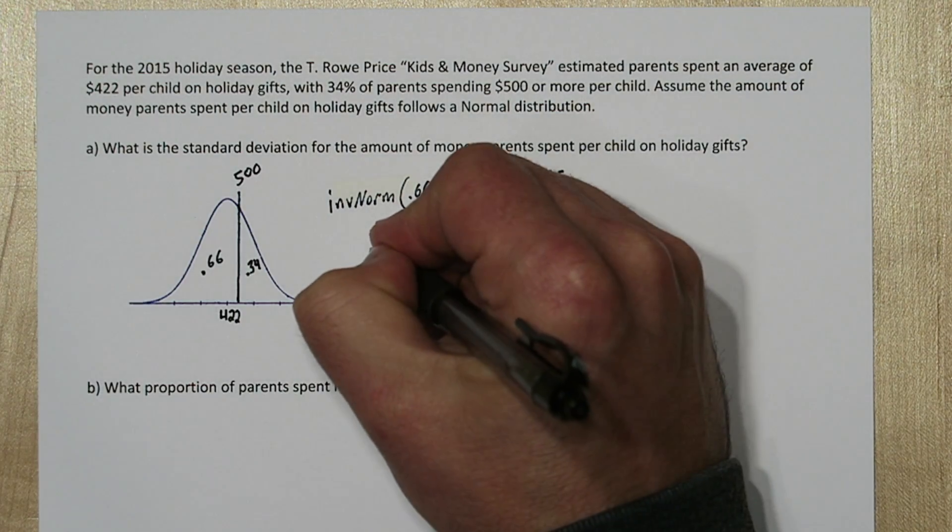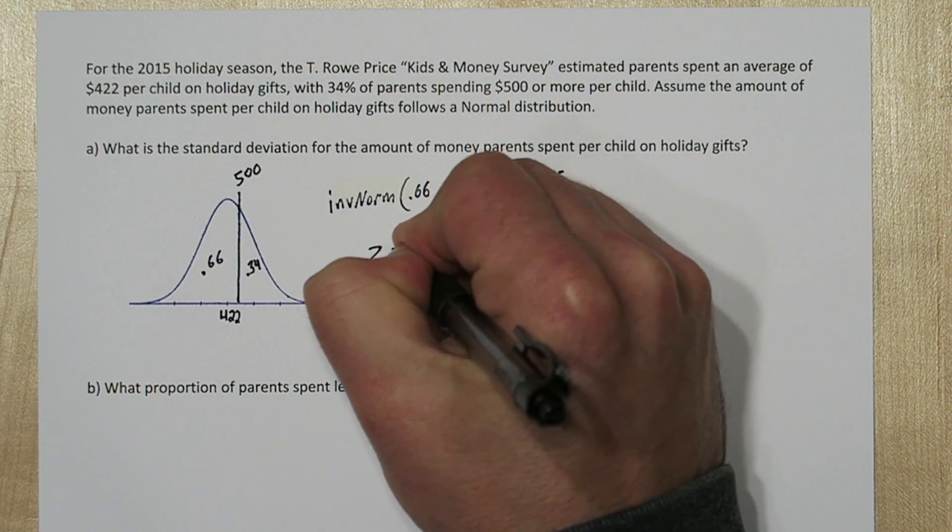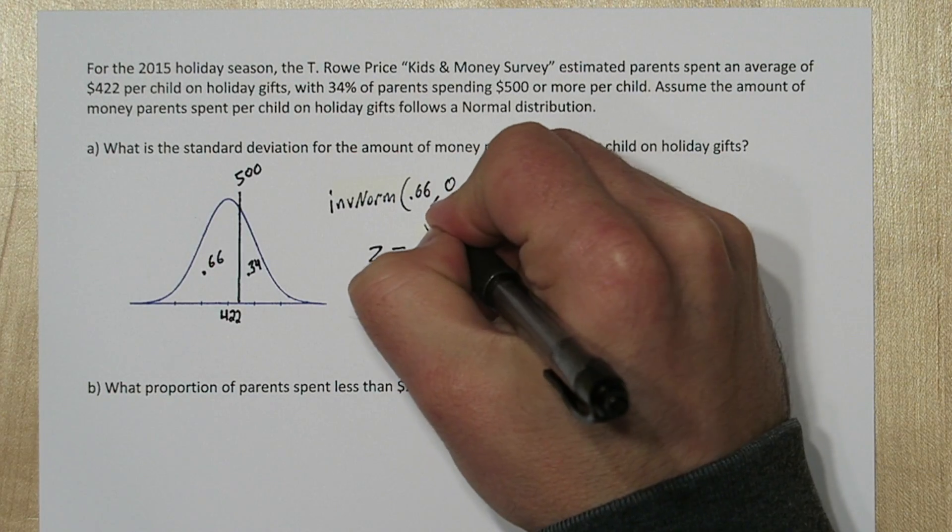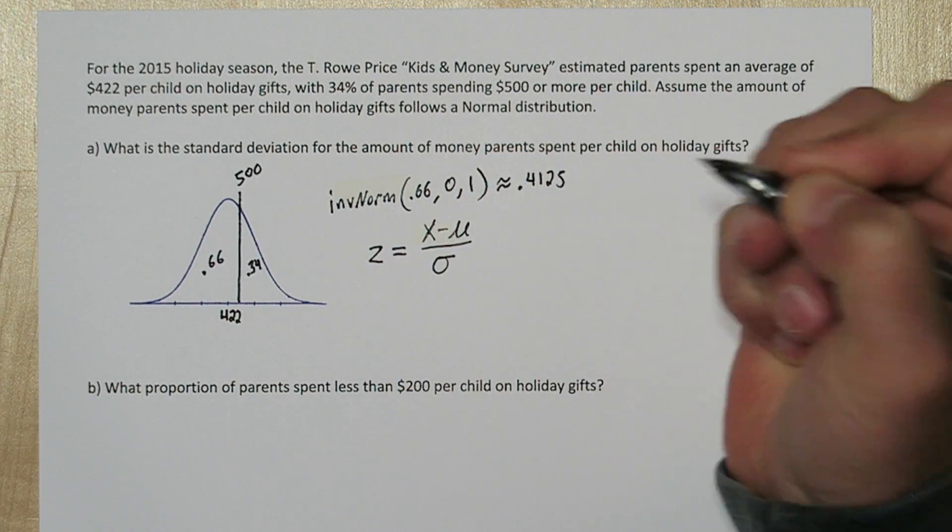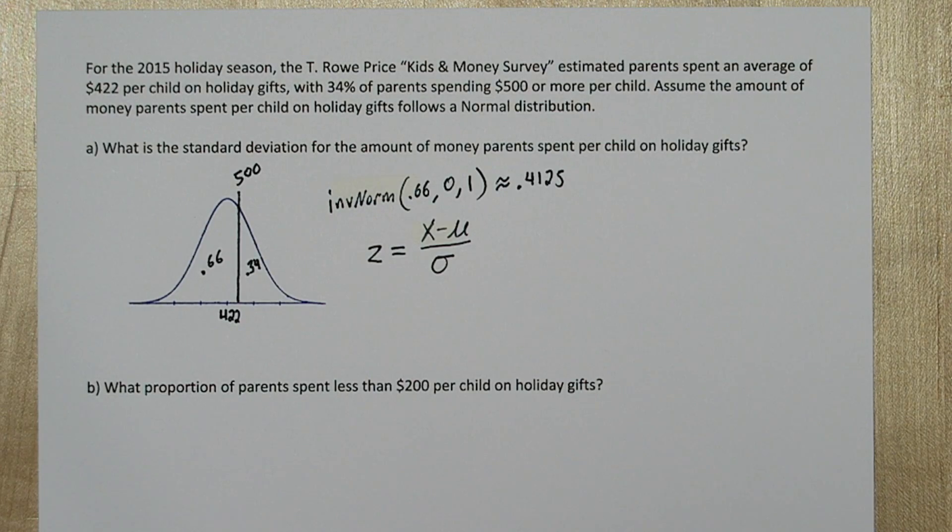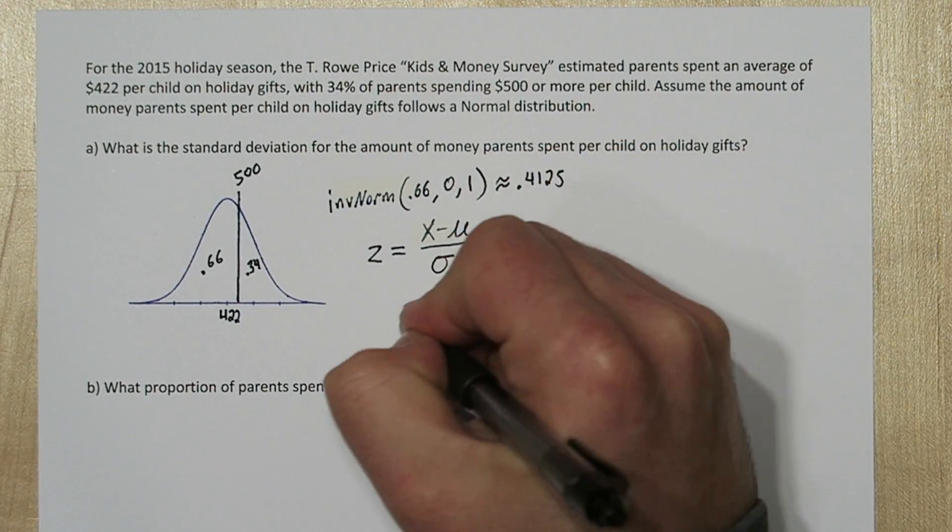Since we found a z-score, let's look at the z-formula. The z-formula is x minus mu divided by sigma equals our z-score. So let's fill out the information we know. Our z-score is 0.4125.